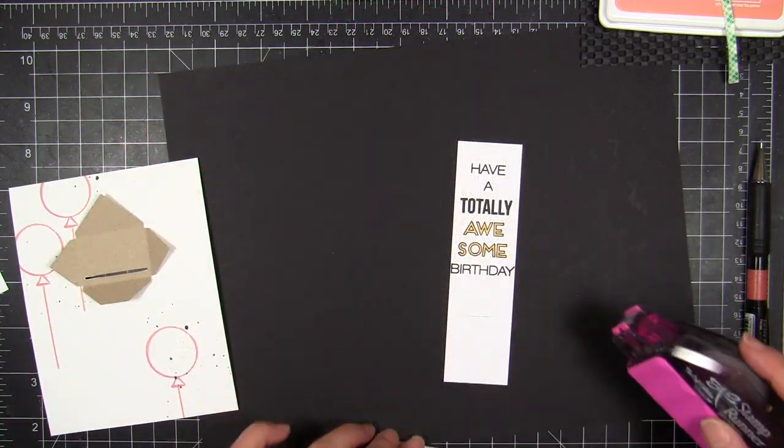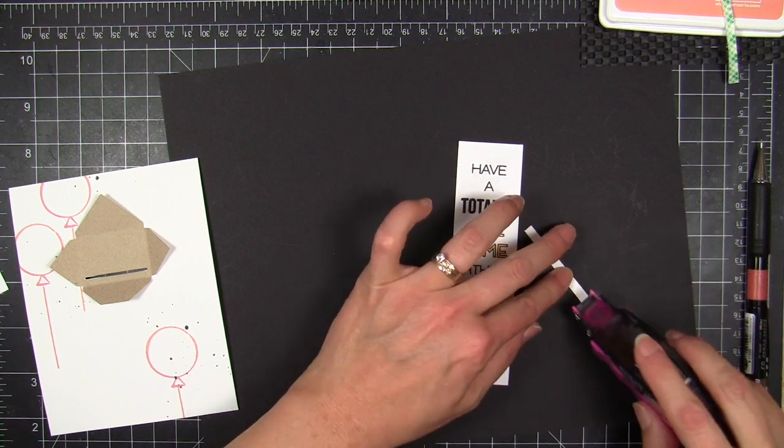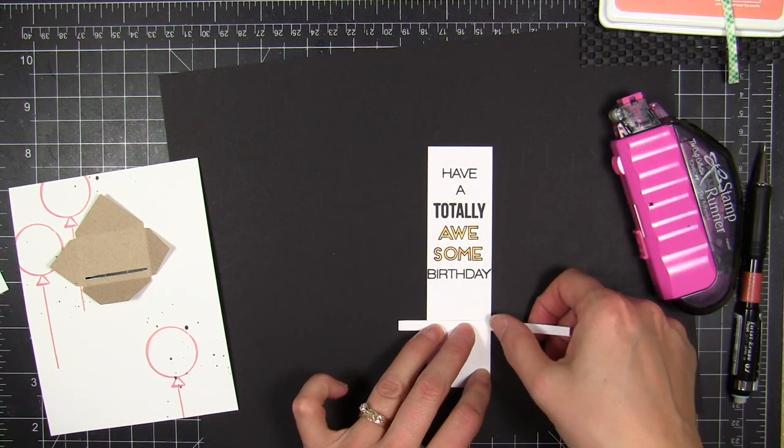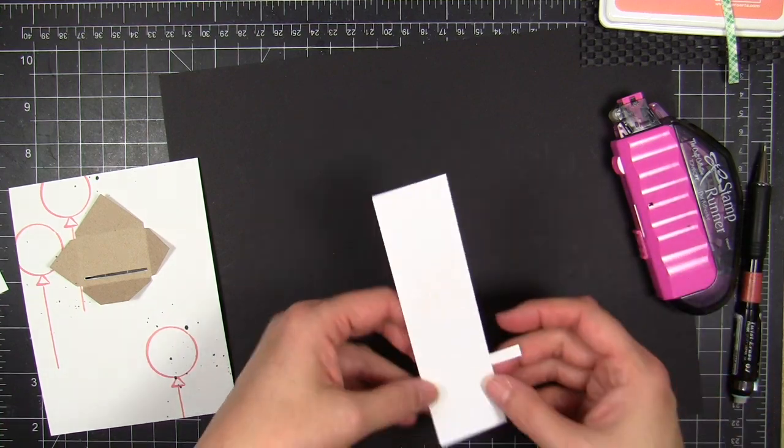And I just need to determine how far I want that slit to be marked so that when you pull that up, what gets exposed. And then I'm going to create a little stop gap out of just some scrap cardstock.